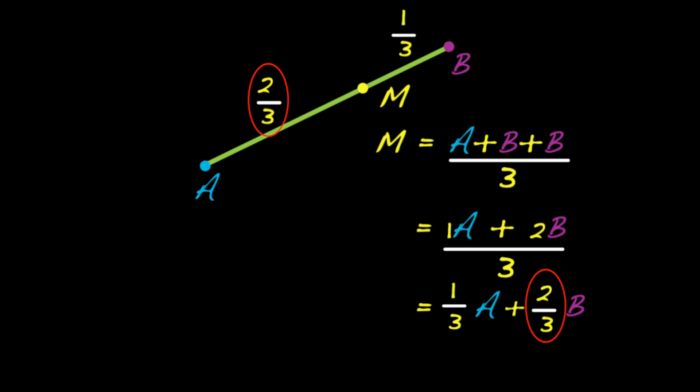But if you think about it, it makes sense. Because if there was a big weight in front of B, you'd expect this point to be very close to B. We can generalize this even further.